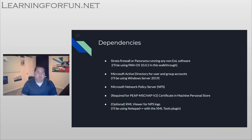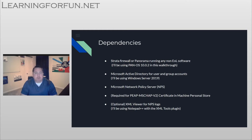For this scenario we're going to need Strata or Panorama up and running. I'm going to be using PAN-OS 10.0.2, but it's supported on any software not on end-of-life. You'll also need Active Directory up and running — that's where our user authentication database will be. I'm using Windows Server 2019, but this should work on any supported Windows server. We also require an instance of Network Policy and Access Server, a machine certificate for the NPS server to configure PEAPv0/MSCHAPv2, and optionally an XML viewer such as Notepad++ with the XML Tools plugin to review NPS logs.